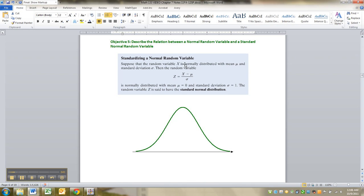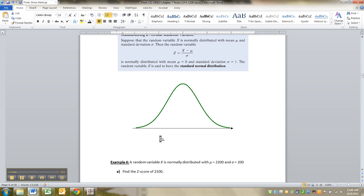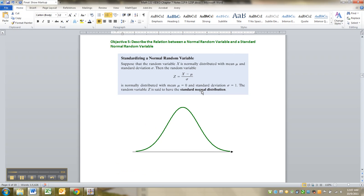So remember Z-scores right here. We had that formula from Chapter 3. To find a Z-score, you take X minus the mean and divide it by the standard deviation. It figures out how far you are from any one particular mean.